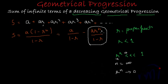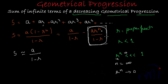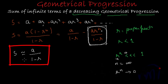When N becomes infinite and R is a proper fraction, R to the power N becomes negligible, making that whole fraction negligible. So for an infinite decreasing geometrical progression, the sum is approximately equal to A by (1 minus R). This is the formula to find the sum of infinite terms of a decreasing geometrical progression. In the next few videos we are going to take some solid examples, so don't miss them. Bye-bye.